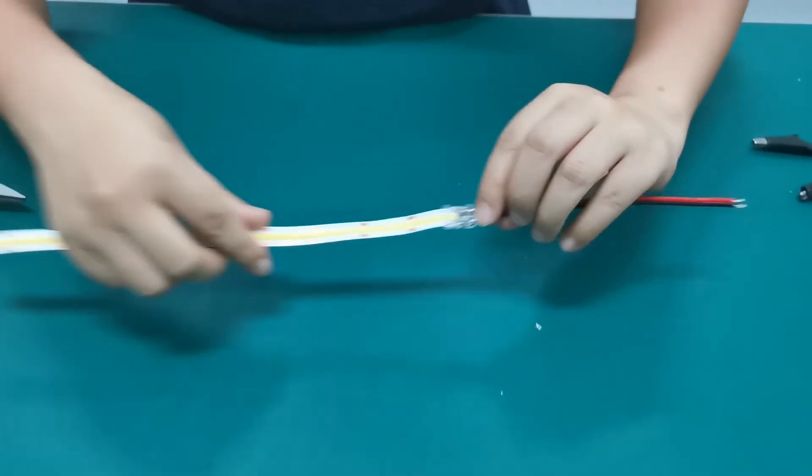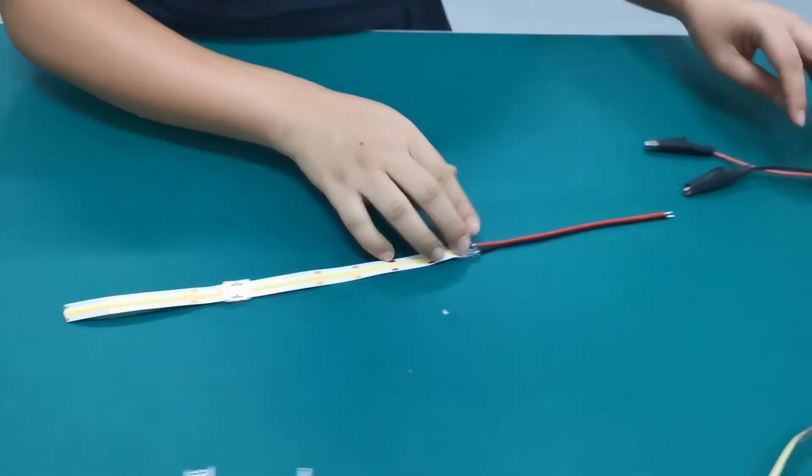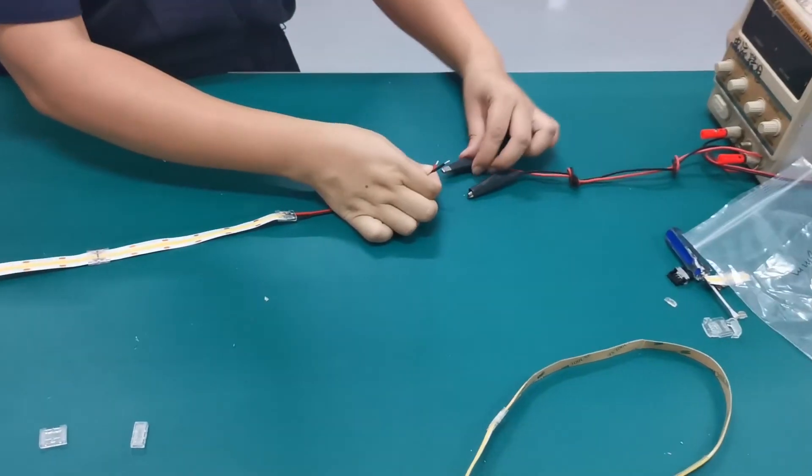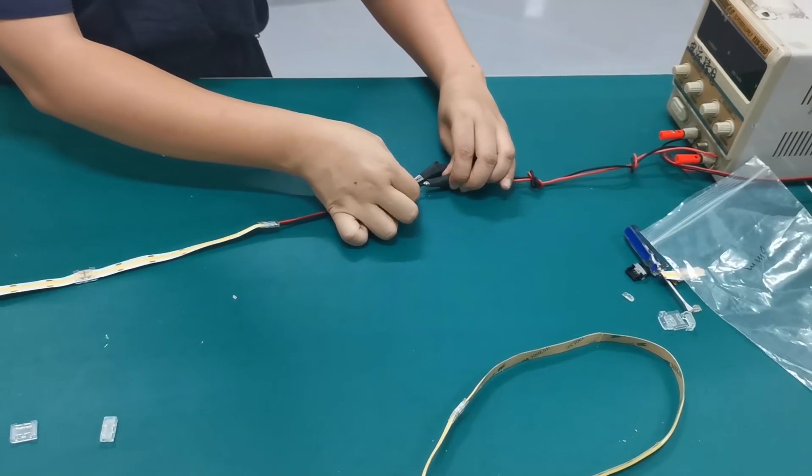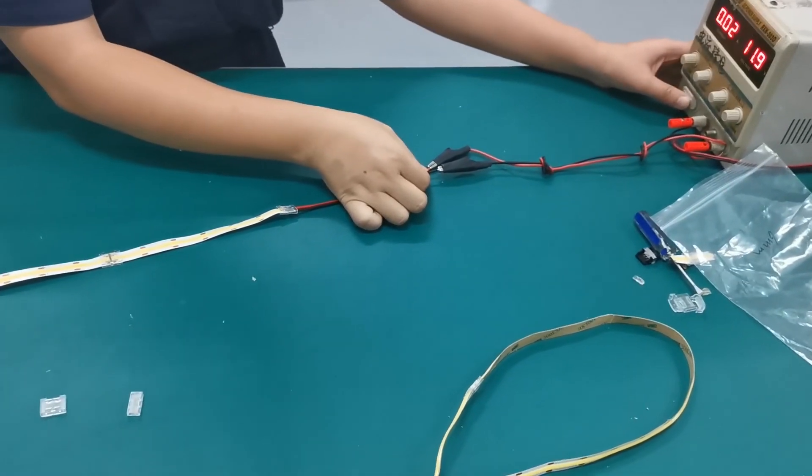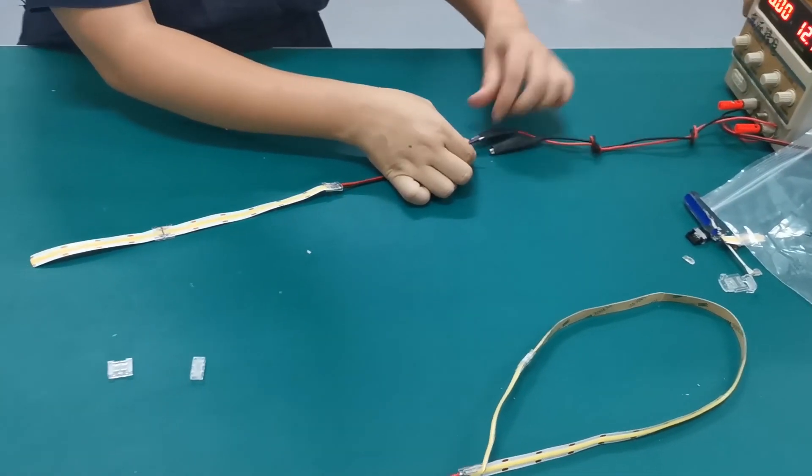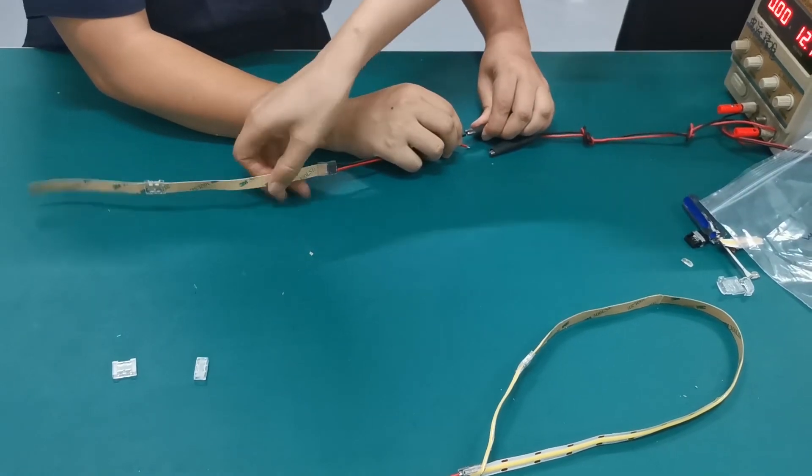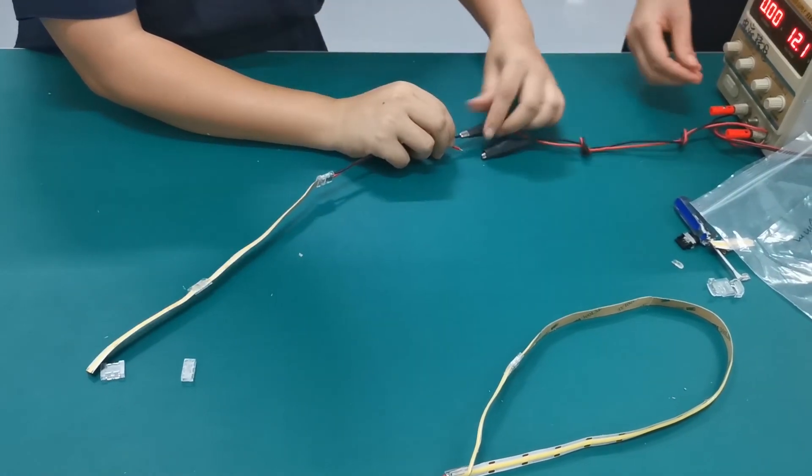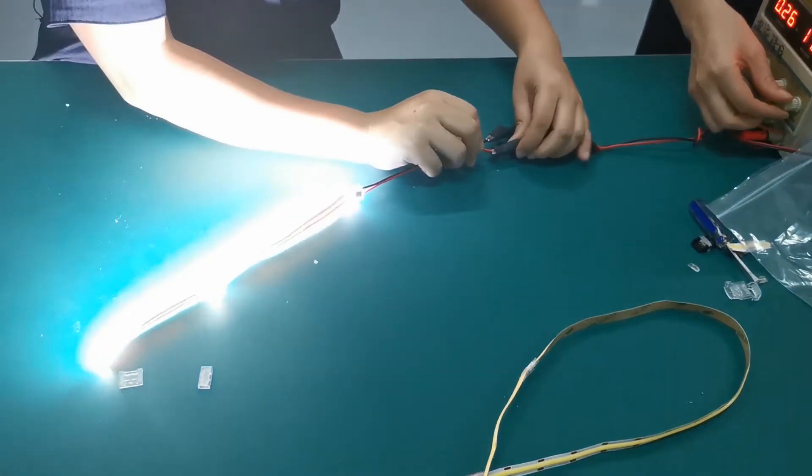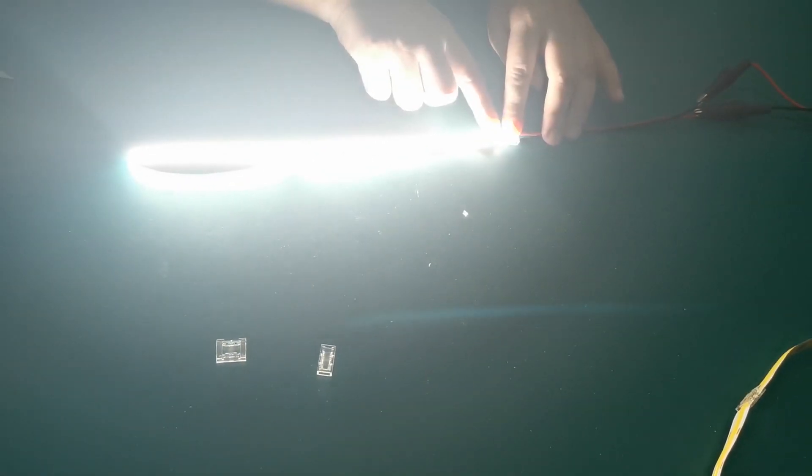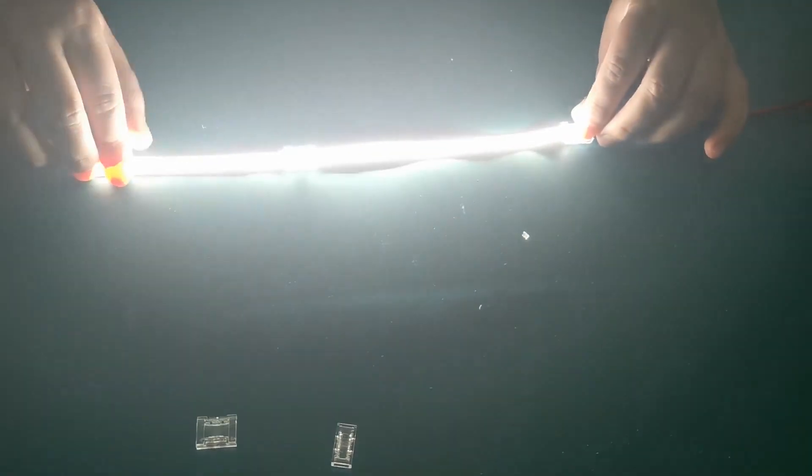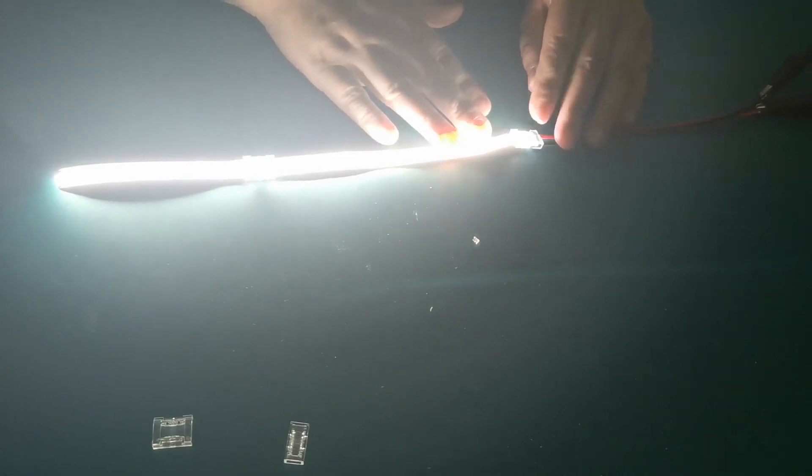Now we light it to show how it looks like. It's clear. See. There is no light being blocked. And the whole strip is so clear. Thank you for your attention.